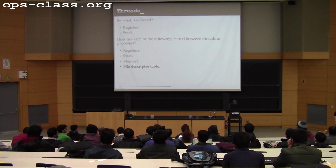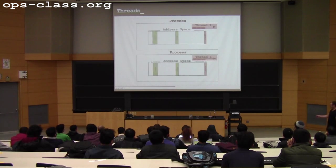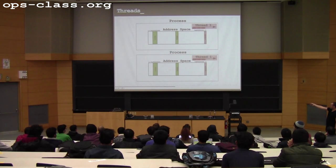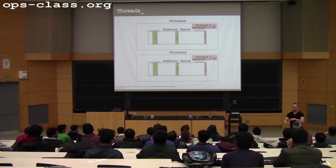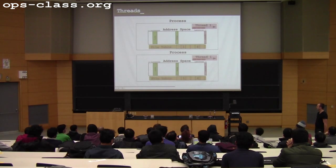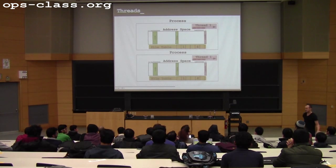The file descriptor table is per process. Here's the diagram: a thread has registers and a stack. The address space is shared. When I have multiple threads, stacks are usually placed high in the address space, separated far enough so that if I make a bunch of recursive function calls, my stack doesn't overwrite the adjacent one. The file table is per process.